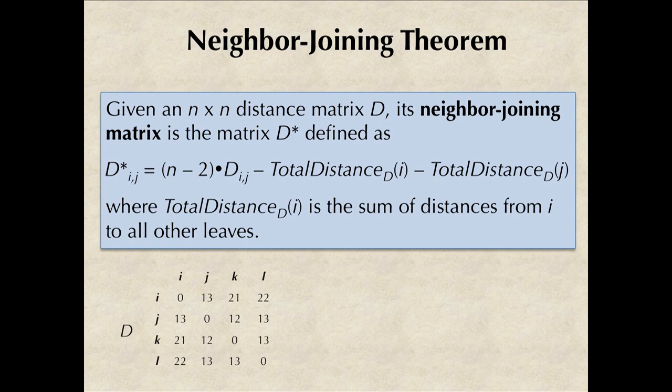The total distance of a leaf node is just the sum of distances from this leaf to all other leaves. For example, the total distance of k in this matrix is 21 plus 12 plus 13, or 46.